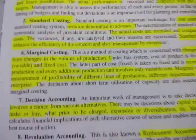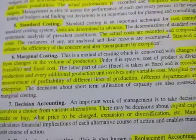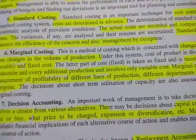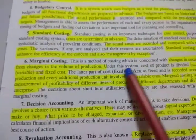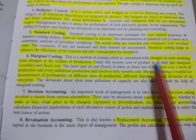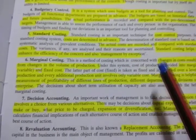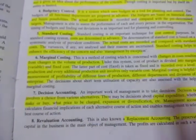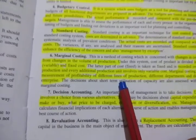Next is marginal cost. Marginal cost is the additional cost incurred when we increase total production. Cost has two types: fixed cost and variable cost. Fixed cost remains the same whether production increases or stays the same. Variable cost changes with production. Marginal cost equals variable cost. Using marginal costing, we can assess the profitability of different lines of production.